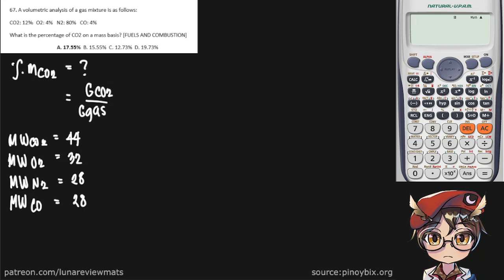First we need to convert our volumetric analysis into a mass, or gravimetric analysis rather. And we do that by multiplying the percent volume by the molecular weight, which we already have here. Let's get on with that.